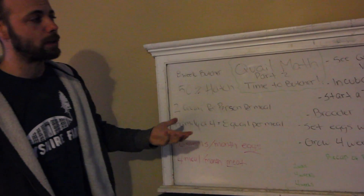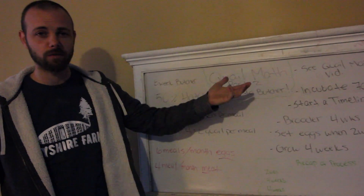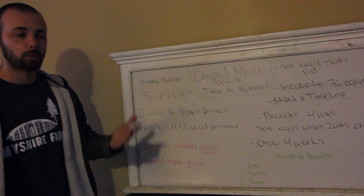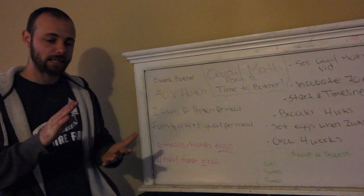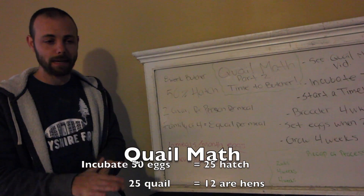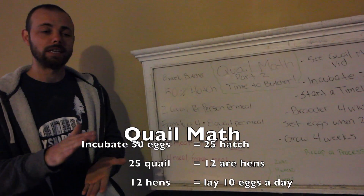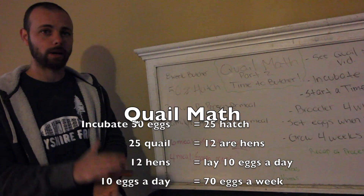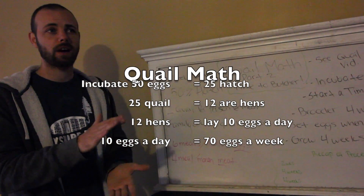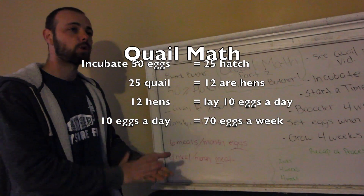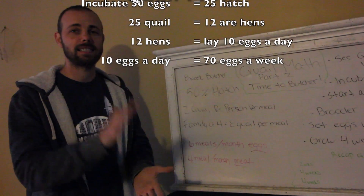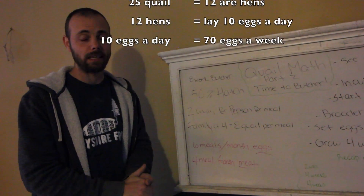We're going to use the same math we did in the first video for egg production. A recap: if you bought 50 eggs and incubated them, you'd get 25 quail. Out of those 25 quail, 12 will be hens, you'll get 10 eggs a day, and that's 70 eggs a week.